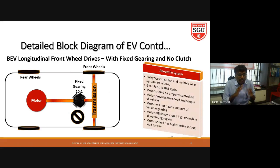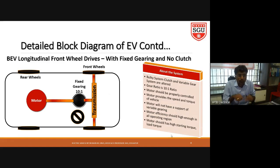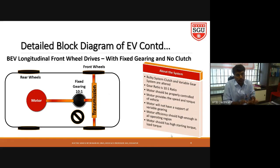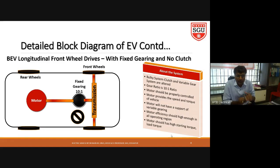In this configuration a fixed gear ratio of 10:1 is used, so the motor must be properly controlled. In the previous configuration, vehicle speed could be controlled using the variable gear system, but here the gear system is constant. Therefore, complex motor control is required so that the motor operates efficiently across all operating regions. The motor must also have high starting torque and high load torque. This makes the motor control system more complicated than in the previous configuration.